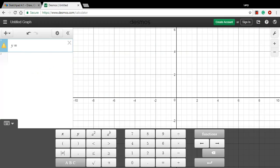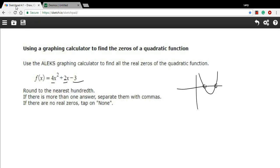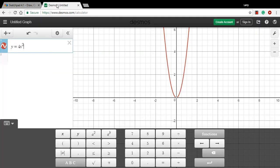So y equals 4x squared, was that minus 3x? Plus 2x minus 3. So plus 2x minus 3.